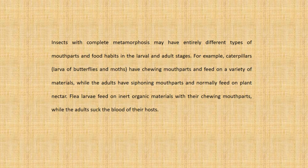For example, caterpillars — larvae of butterflies and moths — have chewing mouthparts and feed on a variety of materials, while the adults have siphoning mouthparts and normally feed on plant nectar. Flea larvae feed on inert organic materials with their chewing mouthparts, while the adults suck the blood of their hosts.